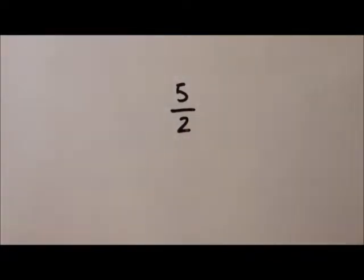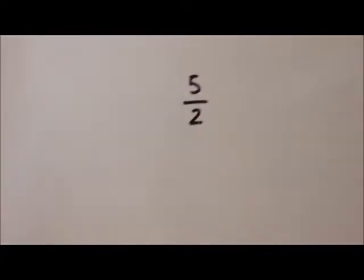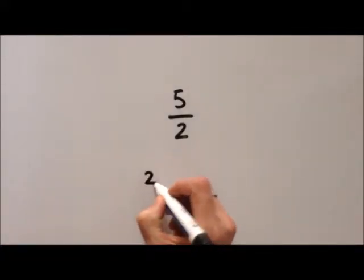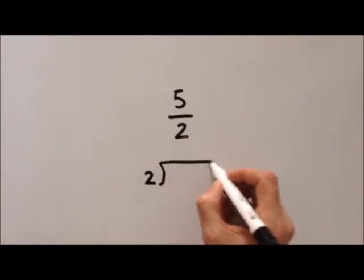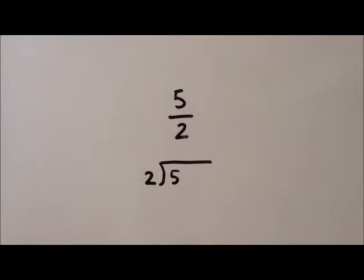Well the answer is quite simple. We just perform bus stop division on this number. So let me just move over here and we do underneath. So we push the 2 on the outside of the bus stop and the 5 on the inside. How many 2s go into 5?